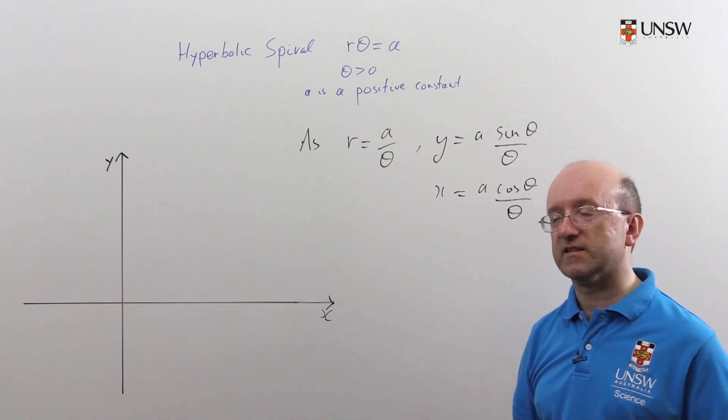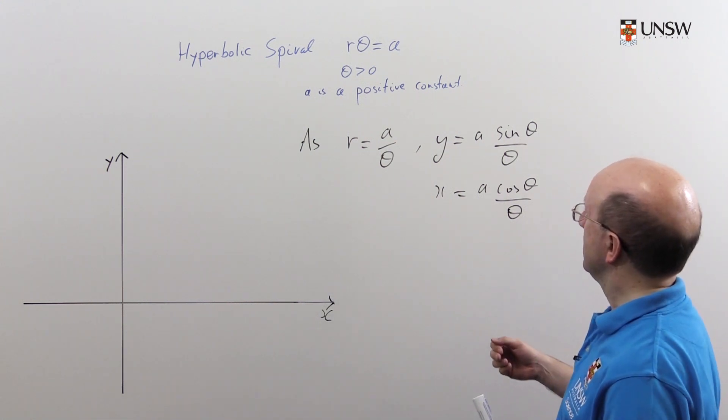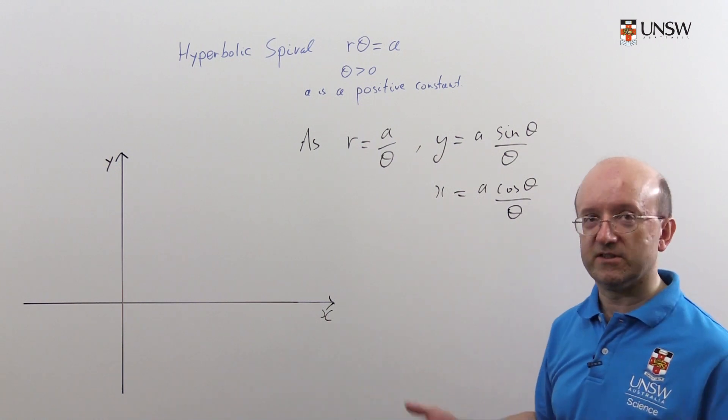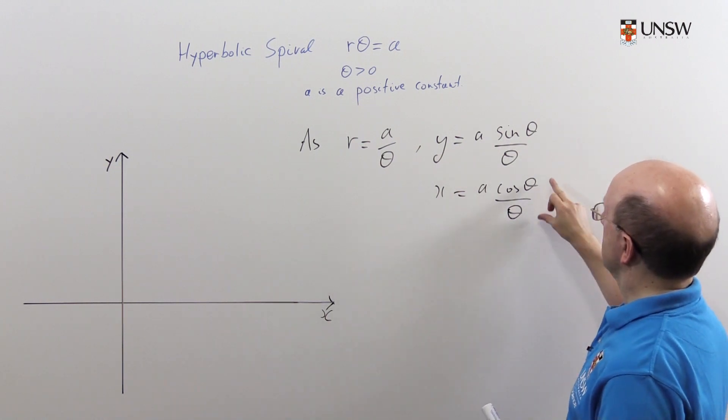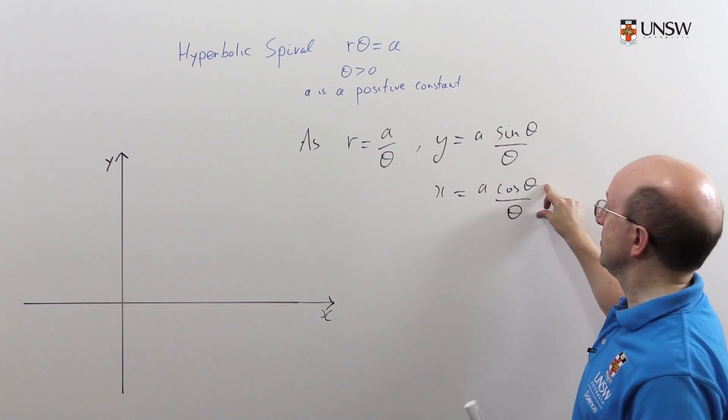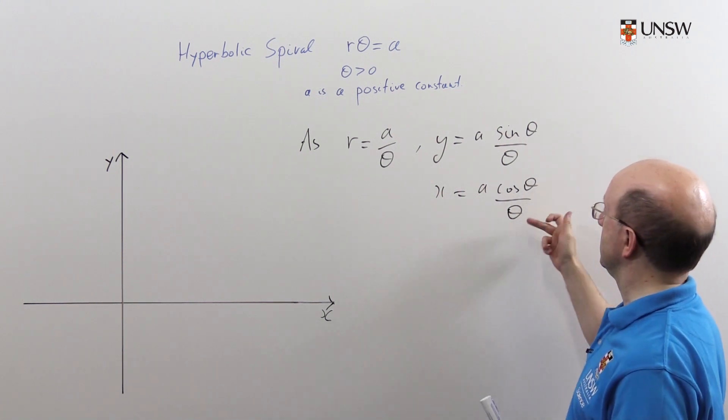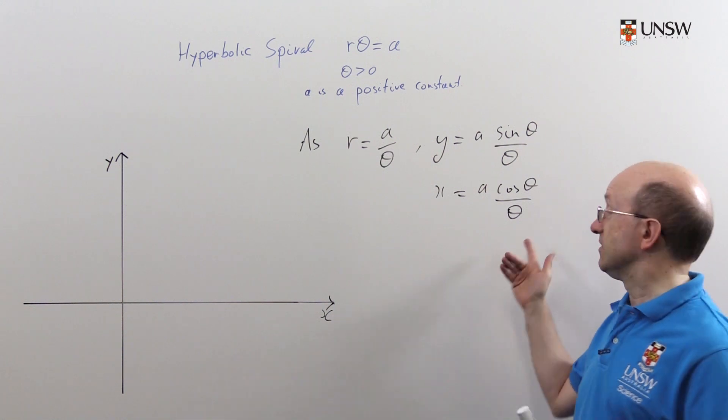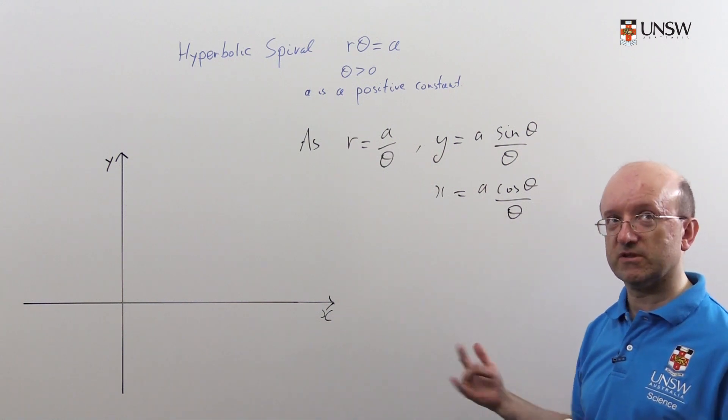We're going to ask ourselves what happens as theta tends to zero from above, because we're interested in theta positive. Let's get x out of the way first: cosine theta over theta as theta goes to zero, cosine theta tends to one, so this is going to tend to infinity, so the x coordinate is going to tend to infinity.